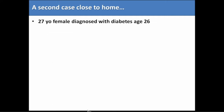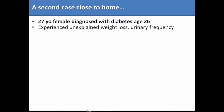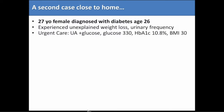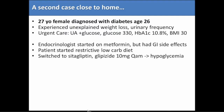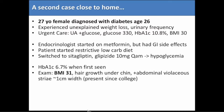A second case, very close to home: a 27-year-old woman diagnosed with diabetes in the past year. She presented with unexplained weight loss, urinary frequency, went to urgent care, had glucose in her urine, elevated glucose and an A1C of 10.8. She was obese with a BMI of 30. An endocrinologist started her on metformin, but she had GI side effects. She tried a very restrictive low-carb diet. Due to side effects with metformin, her provider put her on sitagliptin and glipizide, but she developed hypoglycemia. When I first saw her, her hemoglobin A1C was 6.7%, BMI 31, and she had signs of hirsutism — hair growth under her chin — plus abdominal striae about 1 centimeter in width, present since college.